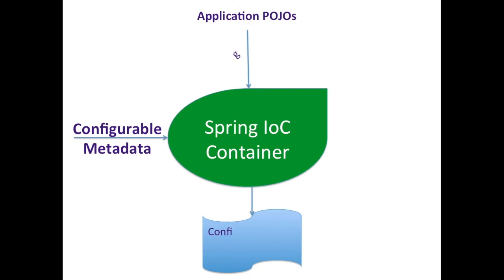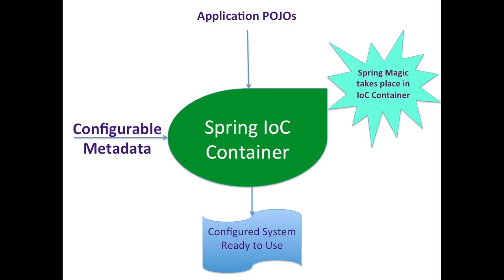The Spring IoC container is responsible for instantiating, configuring, and assembling the Spring beans. The container gets its instructions on what objects to instantiate, configure, and assemble by reading the configuration metadata. The configuration metadata is represented in XML, Java annotations, or Java code. This diagram is a high-level view of how Spring works — the application POJOs are combined with configuration metadata.